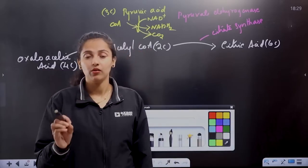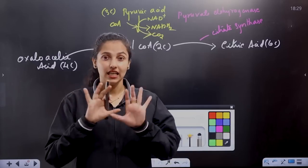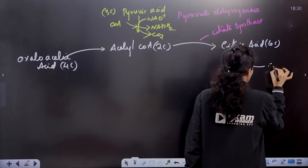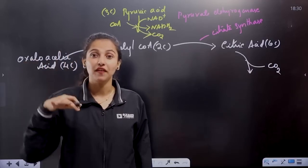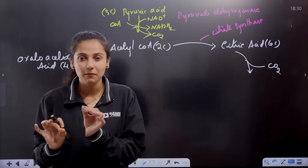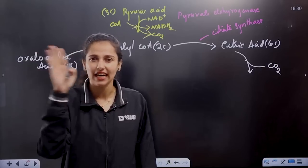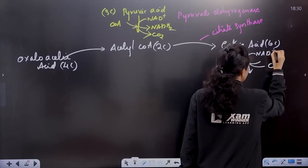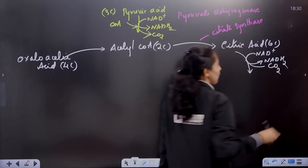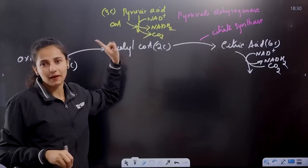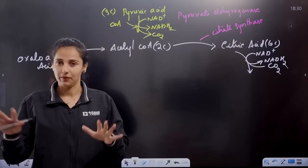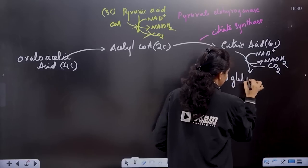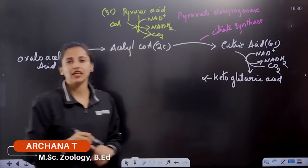How is citric acid processed? From the six-carbon citric acid, we remove hydrogen atoms and a carbon dioxide molecule, forming NADH2. This gives us a five-carbon compound called alpha-ketoglutaric acid.